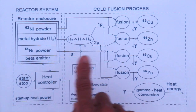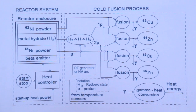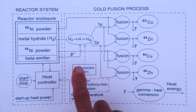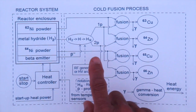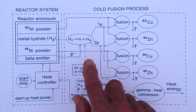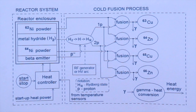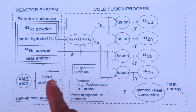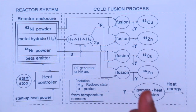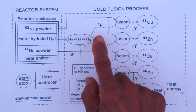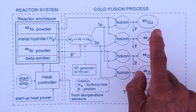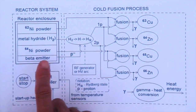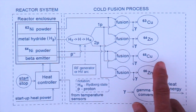Why is a beta emitter needed? First, it could dissociate the hydrogen molecule into hydrogen atoms, and then create a Rydberg state that has a magnetic feature which could combine with the proper nuclear state of the nickel to get a fusion. If one proton is attached to nickel-62 we get copper-63, which is stable. Another isotope in a similar way will get copper-65.